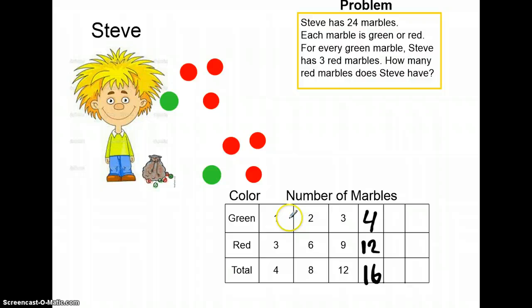It's going up by green marbles by one: one, two, three, four. Our red marbles are going up by three: three, six, nine, twelve. And our total is going up by four each time: four, eight, twelve, sixteen.